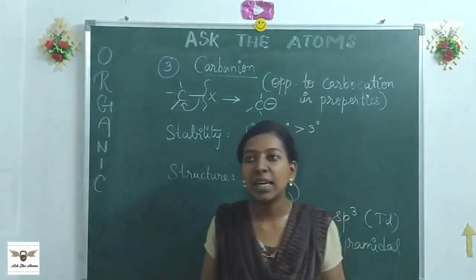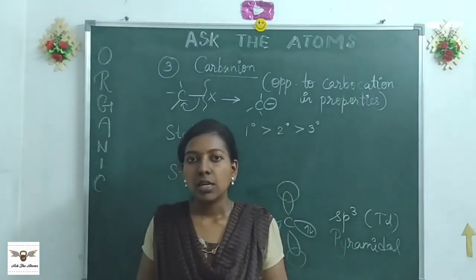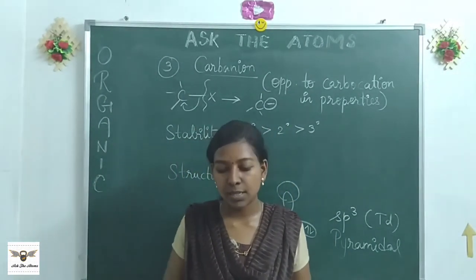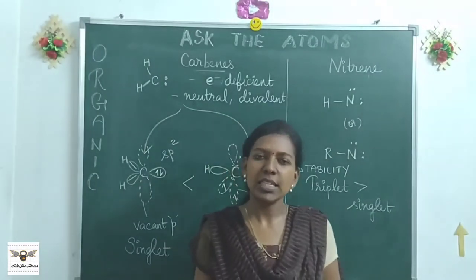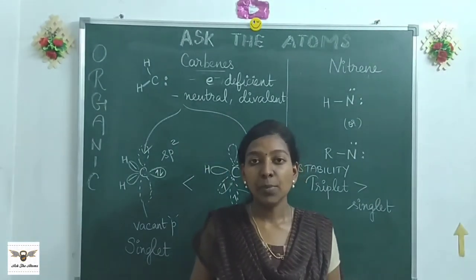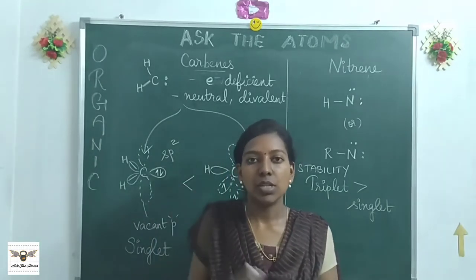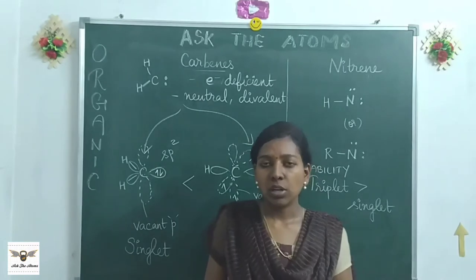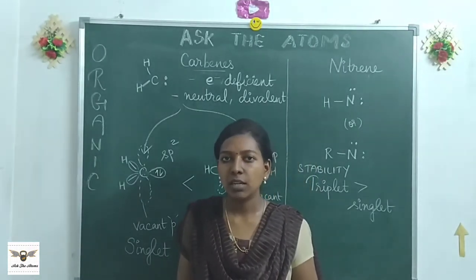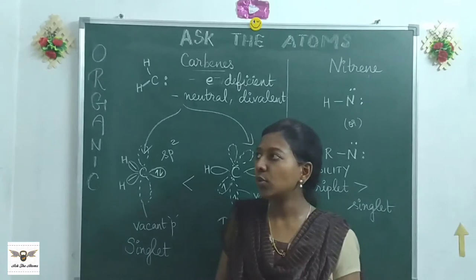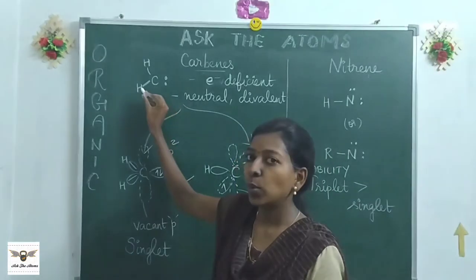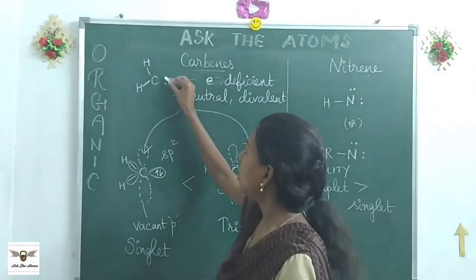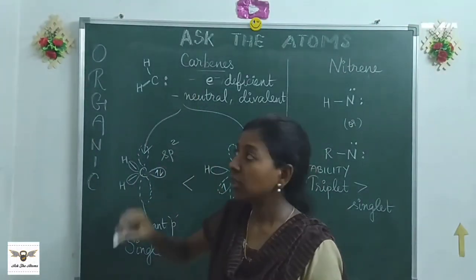The last two intermediates are carbenes and nitrenes — less important at this level, but still worth knowing. Carbenes are quite different intermediates. A carbene is a carbon species with two linkages (divalent) and one lone pair present. It is a unique kind of carbon species.